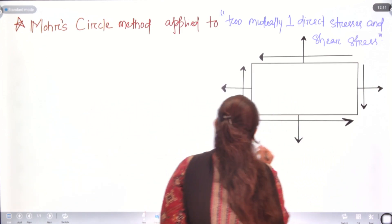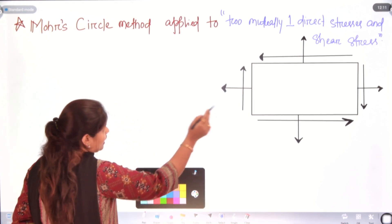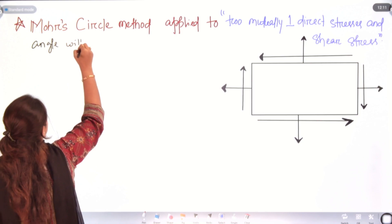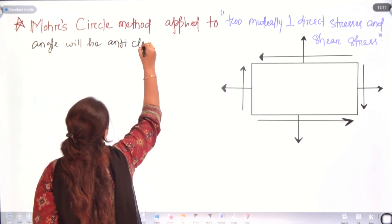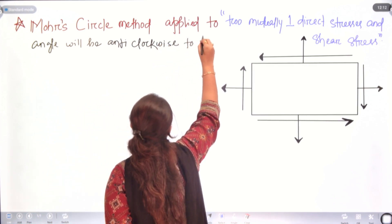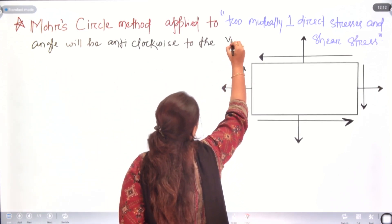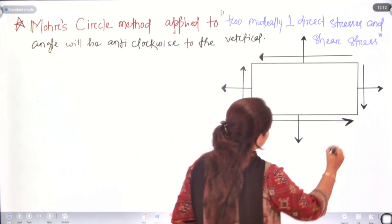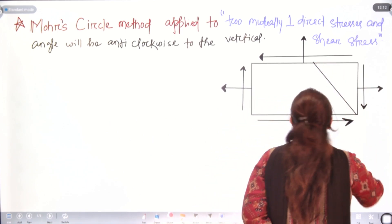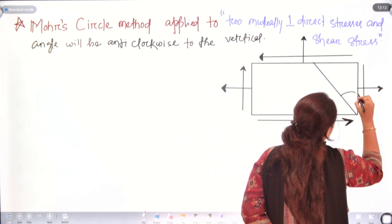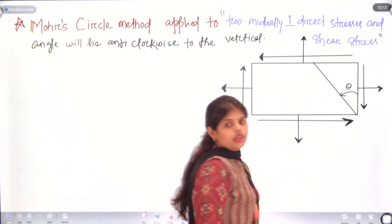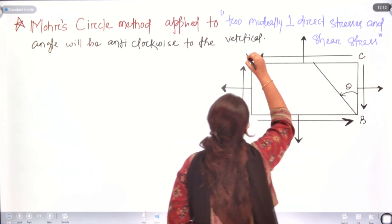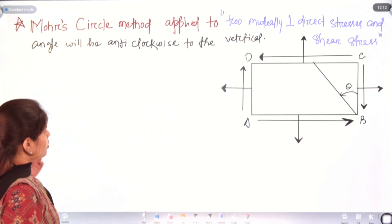The angle is acting in the anticlockwise direction with respect to the vertical — I missed that earlier. So the angle will be anticlockwise to the vertical, meaning our angle will be theta. Now what we need to do is draw the Mohr's circle. Let's see how to draw that circle.